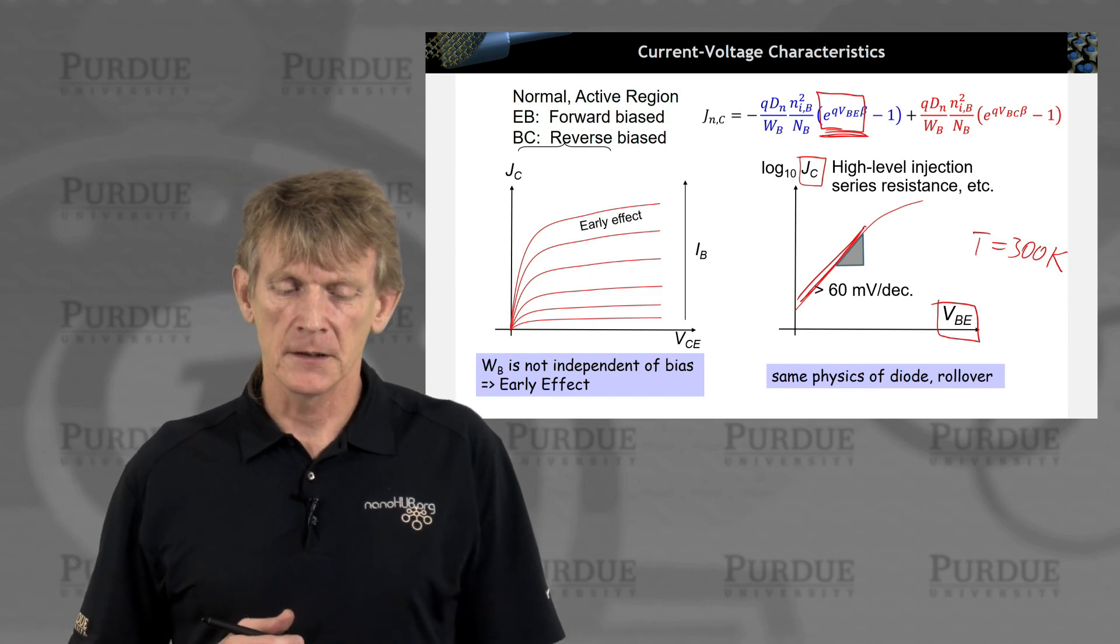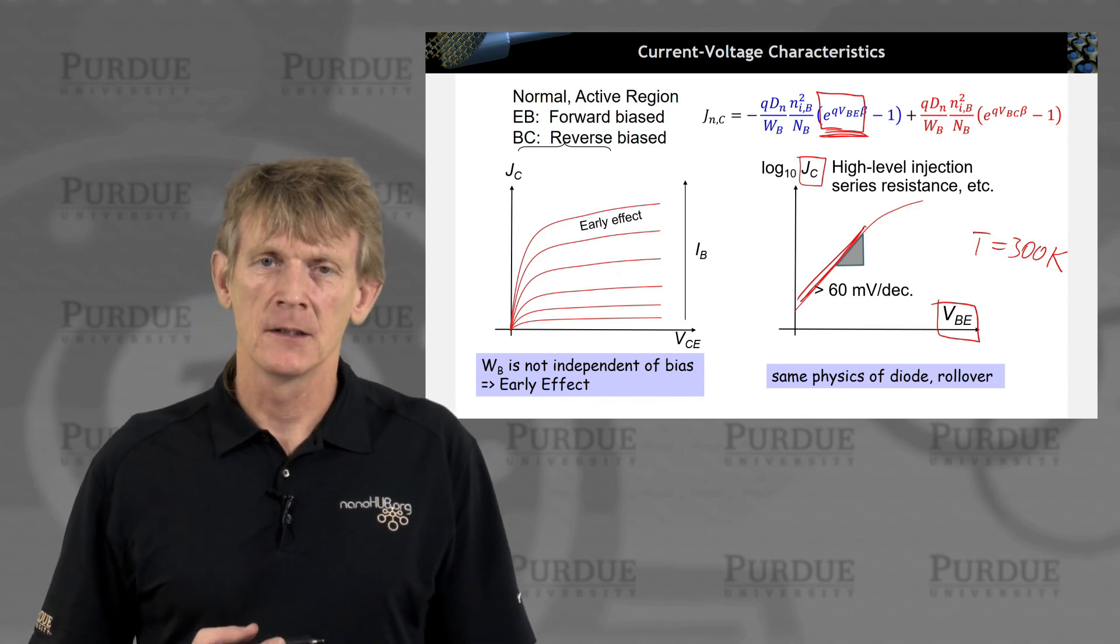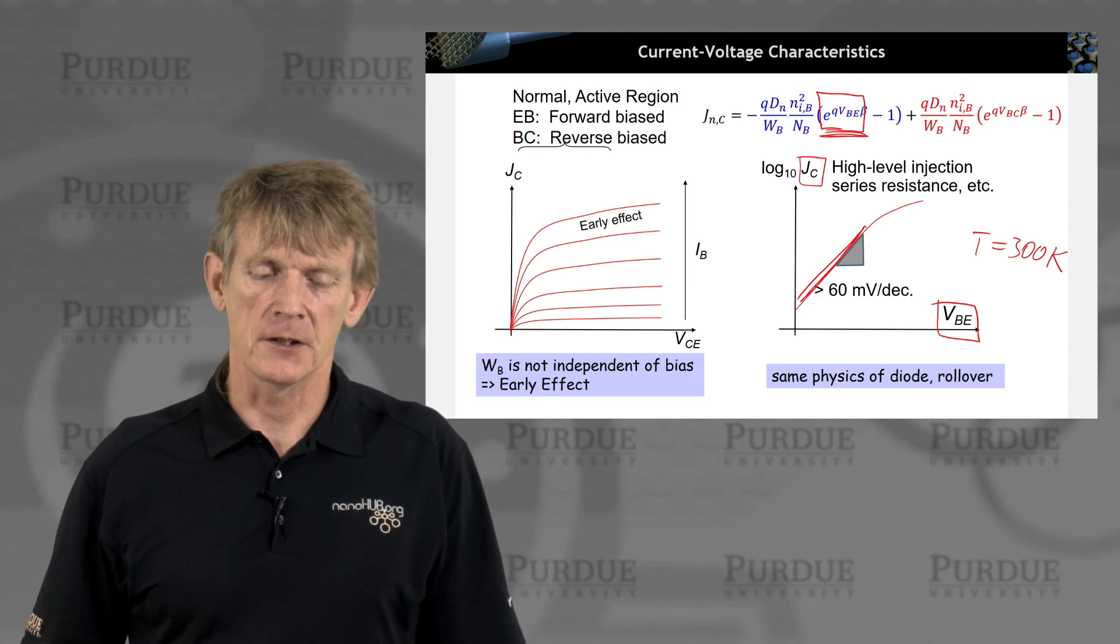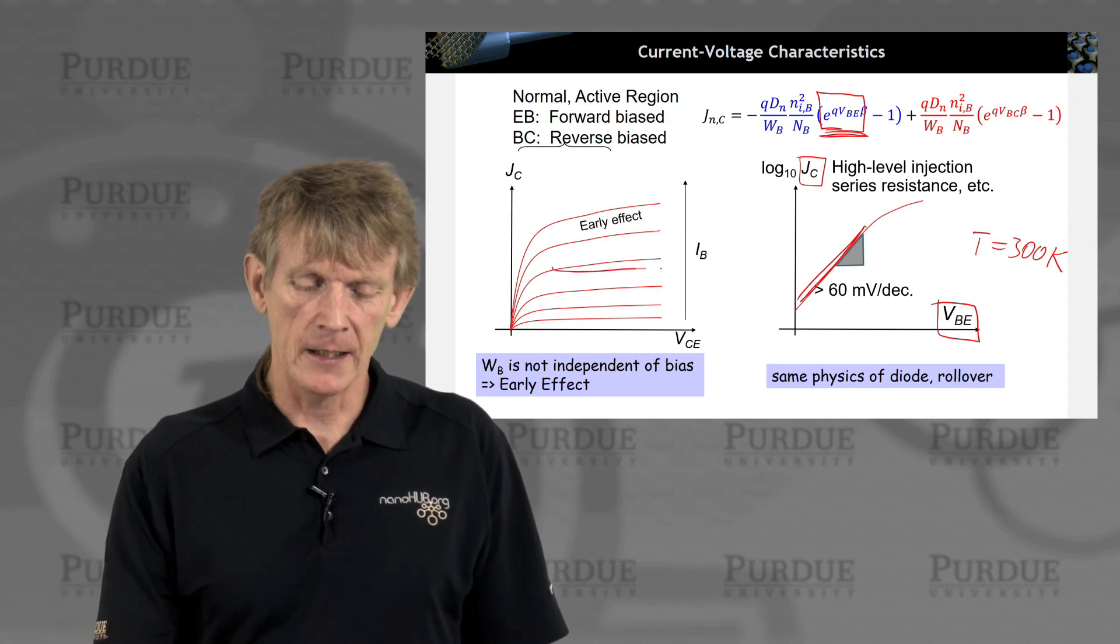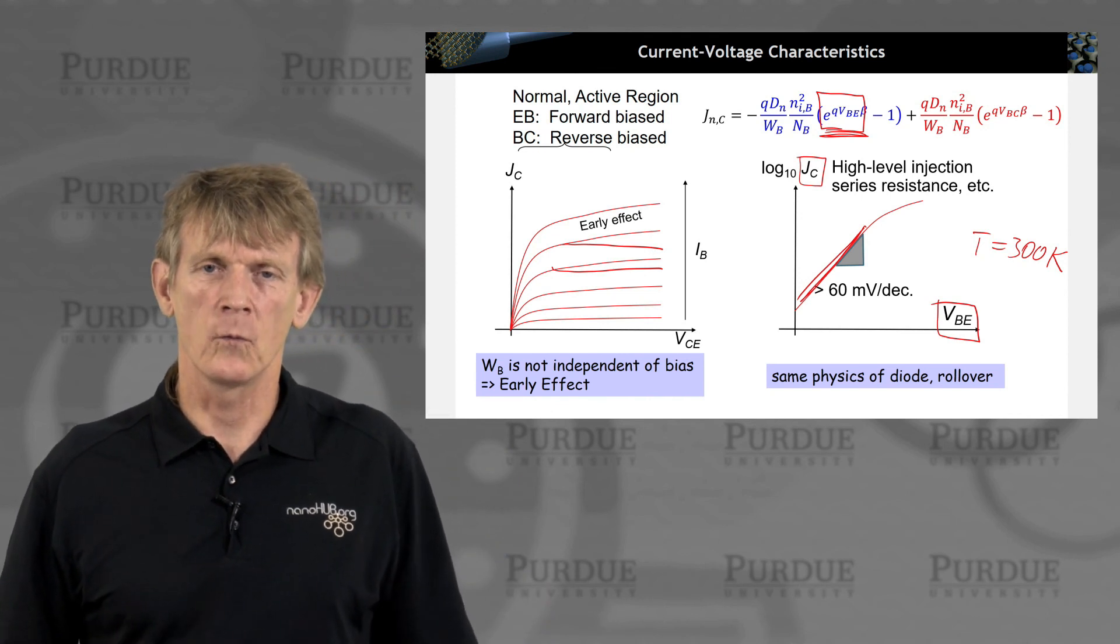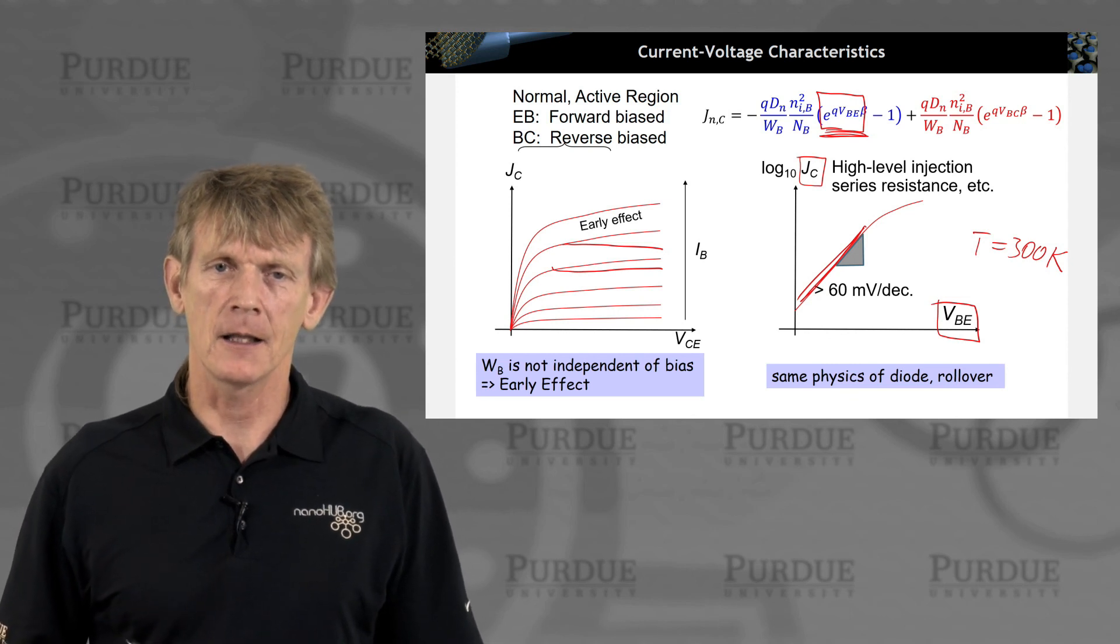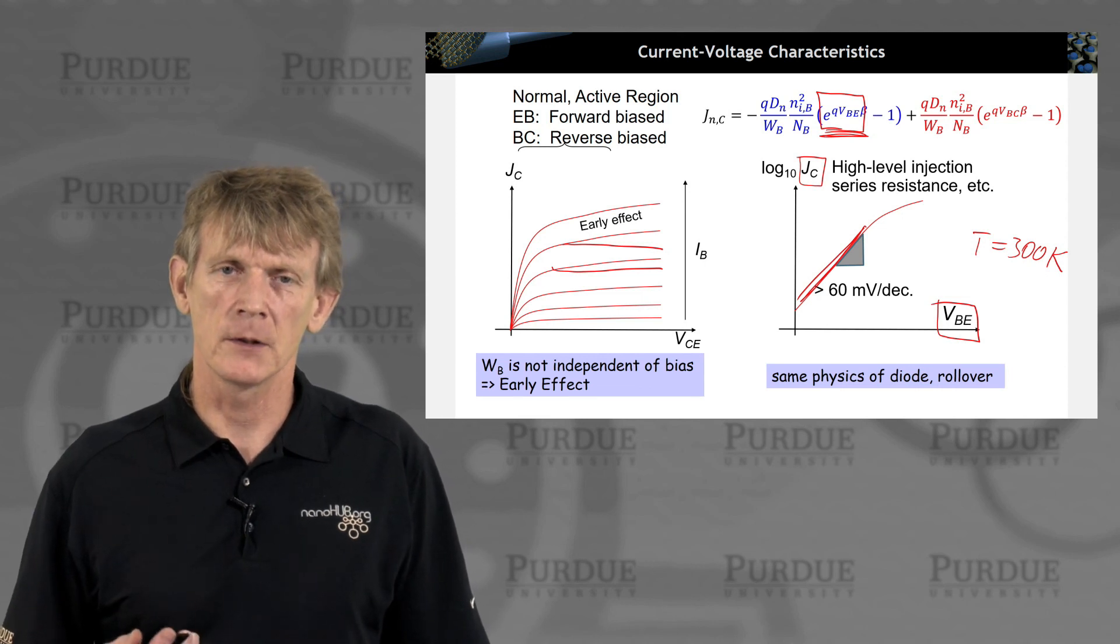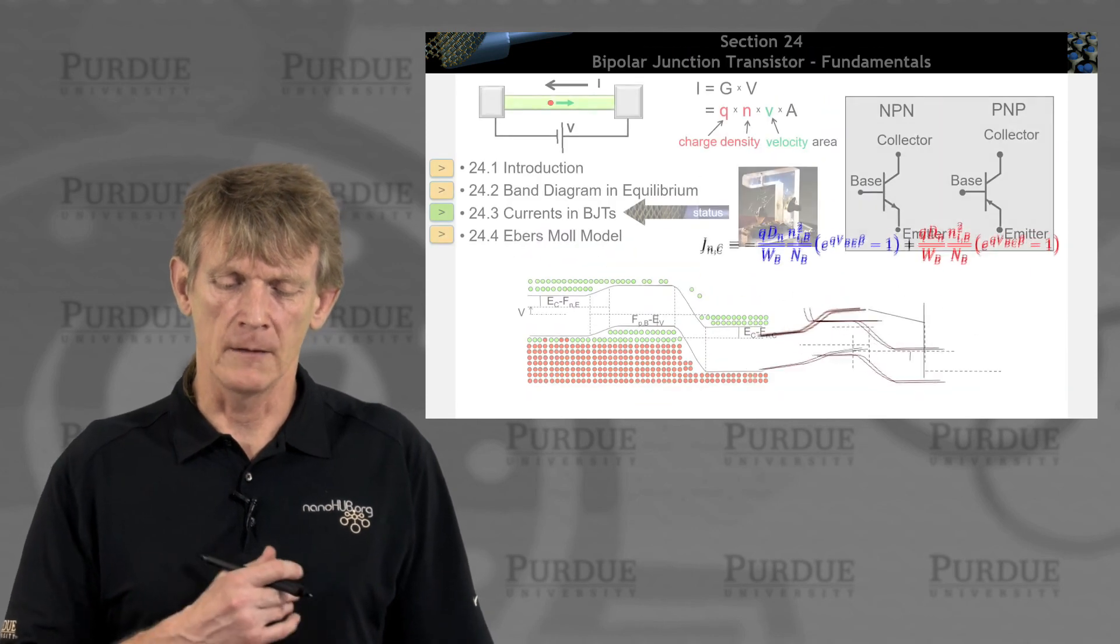You can now ramp up the base current and plot for different base currents the current voltage characteristic, and this is called the output characteristic. Ideally these would be flat lines, but they're not flat in reality, and we'll talk about why that is, and it's called the early effect. There's a semiconductor device physicist by the name Early who defined these expressions and explained them well.